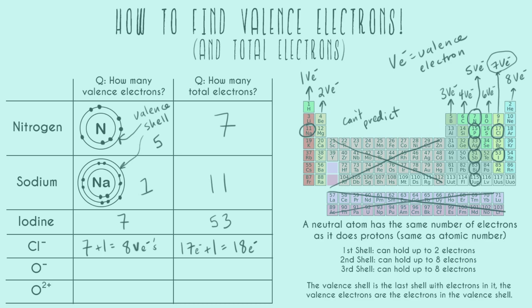Same thing for oxygen with a one-minus charge. Oxygen is number eight, so it normally has eight total electrons. This ion has a charge of negative one, which means it has one extra electron, giving it nine total electrons. Oxygen is normally in the sixth column, so it usually has six valence electrons, but with one extra electron, this oxygen ion has seven valence electrons.